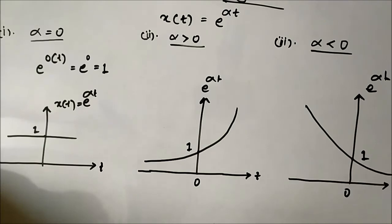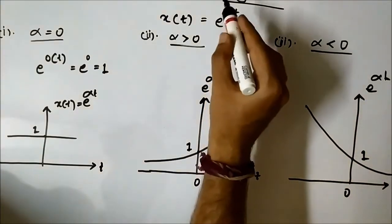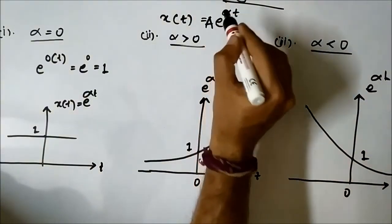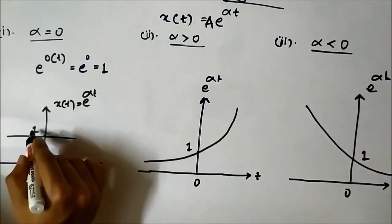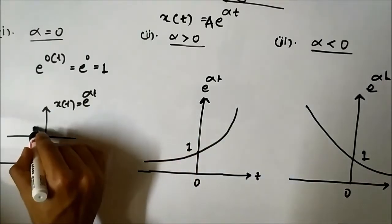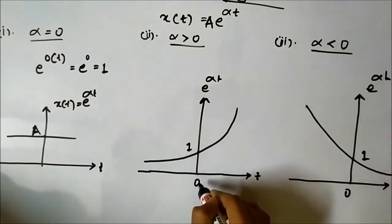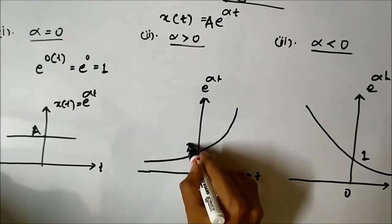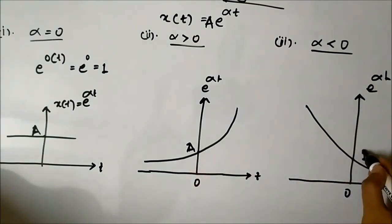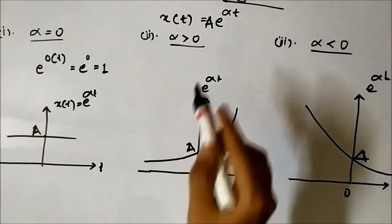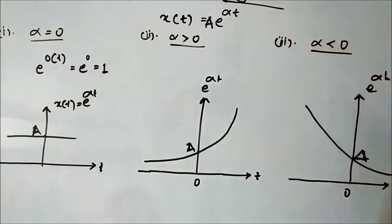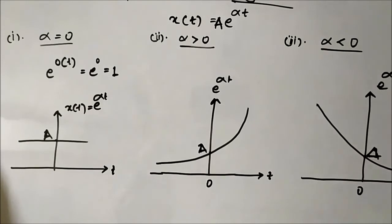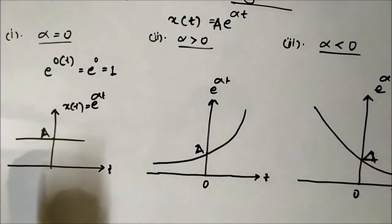Now, suppose instead of just e to the power alpha t, we fix an amplitude A with it. In that case, at t equals zero the value becomes A instead of one — so the intercept becomes A for all three cases when an amplitude factor A is applied.